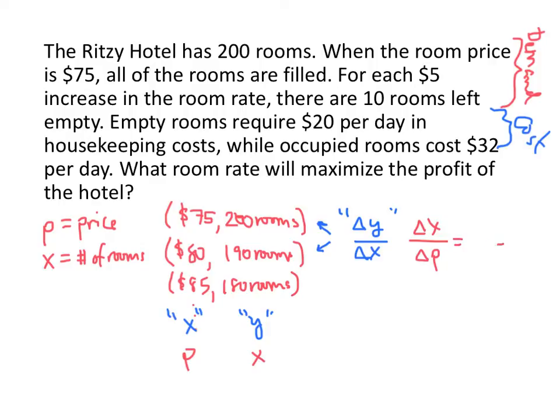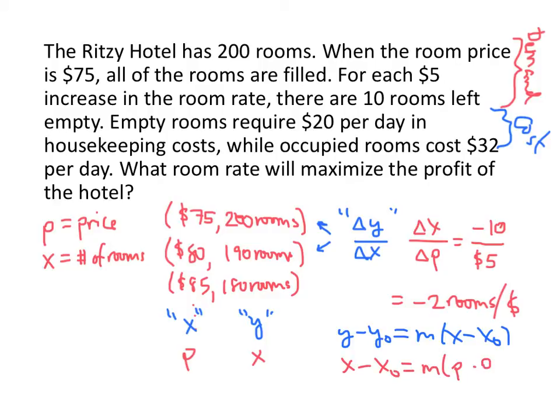So in this case the change in P is going to be $5, and when that price changes by $5, the X changes in the negative direction by $10. $5 increase in price causes a 10 reduction in the number of rooms. So that gives a slope of negative 2 rooms per dollar. So we're going to take that information and plug it into our point slope form, which is Y minus Y zero equals M times X minus X zero. But again, because of the way that we're thinking about this, this is really going to be X minus X zero, because X is playing the role of the Y variable, equals M times P minus P zero, because P is the variable playing the role of the X.